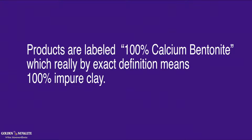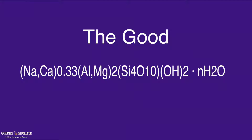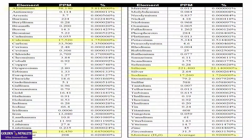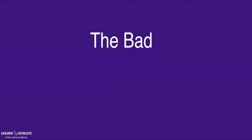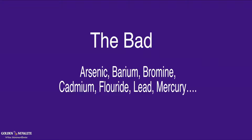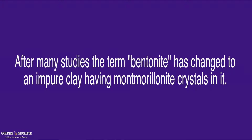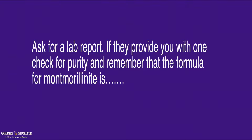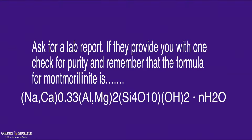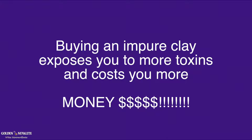Products are labeled 100% calcium bentonite, which by exact definition means 100% impure clay. The good is in the crystals. The bad is in the toxic metals commonly associated with the clays. After many studies, the term bentonite has changed to describe an impure clay having Montmorillonite crystals in it. Ask for a lab report. If they provide you with one, check for purity and remember the formula of Montmorillonite. Buying an impure clay exposes you to more toxins and costs you more money.